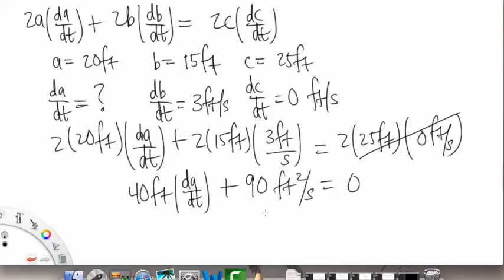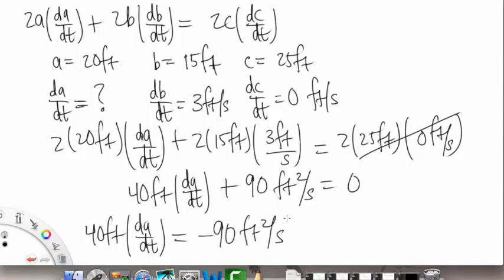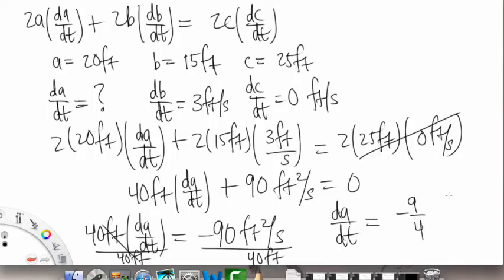So then this, if we subtract that over, we're going to get 40 feet times dA/dt is equal to negative 90 feet squared per second, and if we divide both sides by 40 feet, divide by 40 feet, what we're going to get is dA/dt is equal to negative 9 over 4, and then we have feet per second.